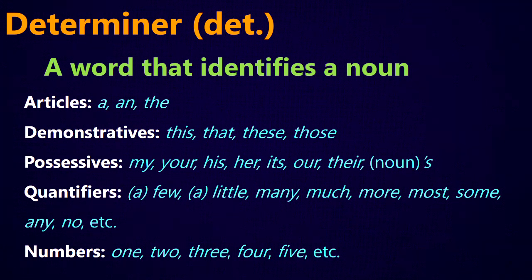Quantifiers such as few, a few, little, a little, many, much, more, most, some, any, no — and there are more quantifiers than this list. Numbers can also work as determiners, like one, two, three, four, five. For example, if you say 'five people,' then that 'five' works as a determiner in the sentence.